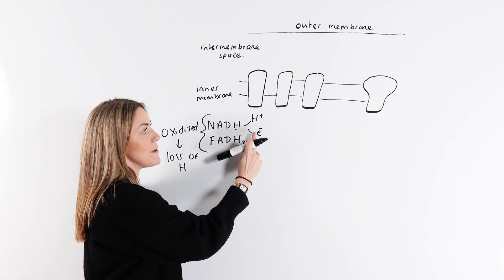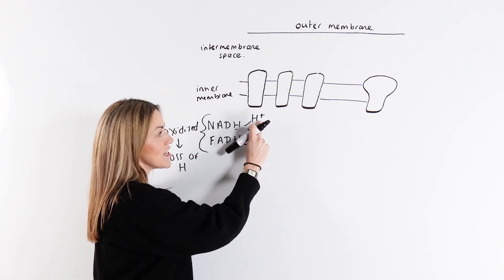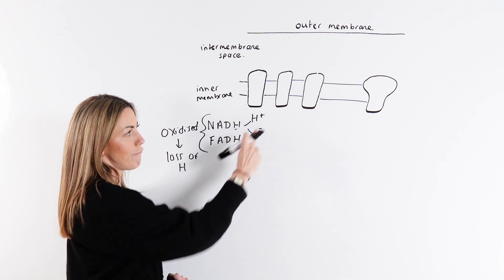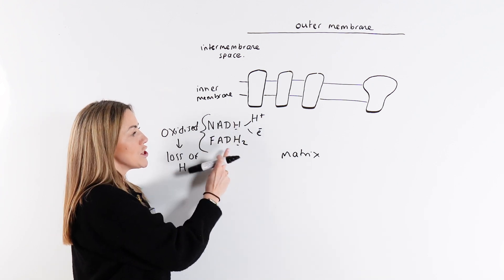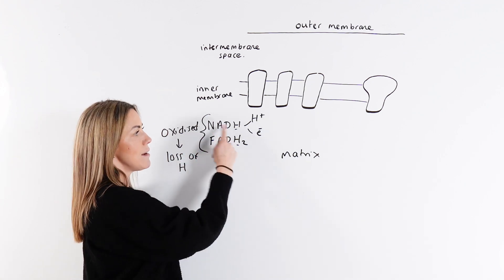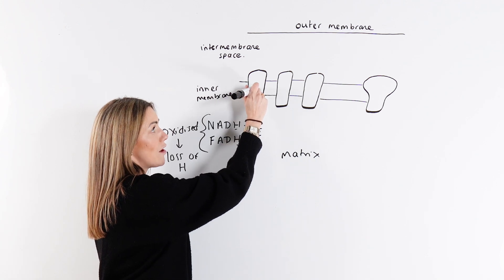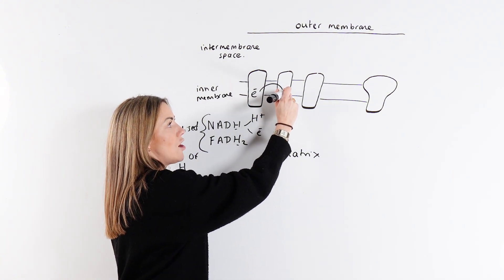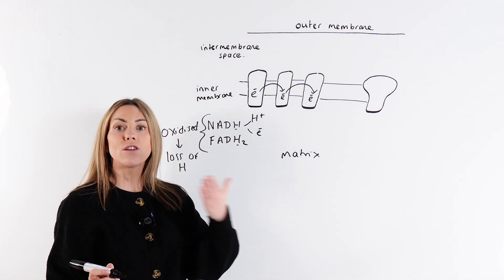The electrons are going to be transferred to what we call the electron transport chain, and the hydrogen ions are going to be pumped into the intermembrane space from the matrix. The electrons pass to the electron transport chain and are transferred along the electron carriers in a series of redox reactions.